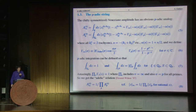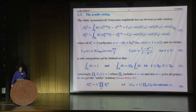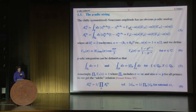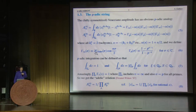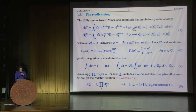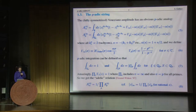The p-adic string is well known, so let me go through it quickly. It's based on the analogy between the two lines of equation 5. The symmetrized Meson-Anon amplitude, which John Schwartz told us about, can be expressed in terms of what's called a local gamma function, which is a small modification of the usual Euler gamma function. And when you write the Veneziano amplitude in this way, it generalizes very simply to the p-adic numbers.